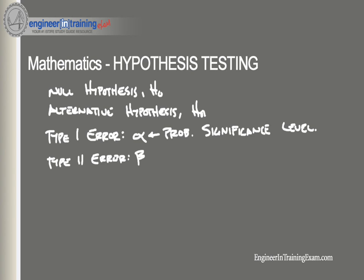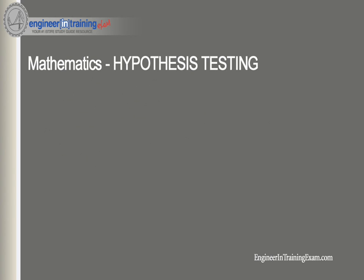The most common hypothesis testing that we will encounter is that of testing a mean. The process of hypothesis testing consists of four steps: number one, state the hypotheses; two, formulate an analysis plan; three, analyze sample data; and four, interpret the results. Let's run through each one of those steps.